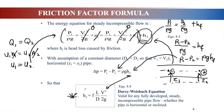HF comes from the Darcy-Weisbach equation — it's important to memorize this. HF equals friction factor F times L over D times V squared over 2g. F is the friction factor from Moody's chart. L is the total length of the pipe, D is the pipe diameter, V is the fluid velocity, and g is gravitational acceleration. Substituting gives P1 minus P2 in units of Newton per meter squared. If you want head units instead, divide by rho·g, giving delta P over rho·g equals HF in meters.